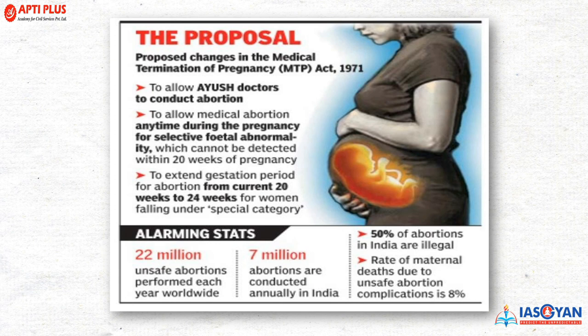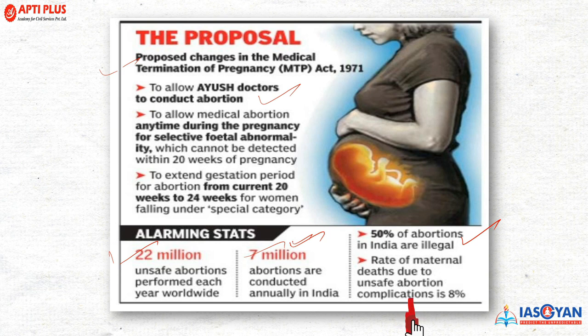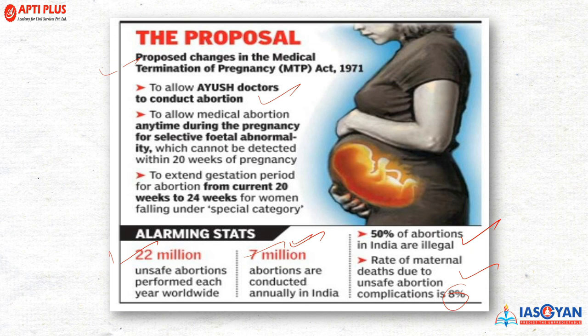An infographic explains how things work in India. The proposed change amends the Medical Termination of Pregnancy Act 1971 to also allow AYUSH doctors to conduct abortions, which has caused controversy. On the alarming state: 22 million unsafe abortions are performed each year worldwide, and 7 million abortions are conducted annually in India. 50% of abortions in India are illegal despite government action, and the rate of maternal death due to unsafe abortion stands at 8%. These are important figures to incorporate in Mains and essay papers.